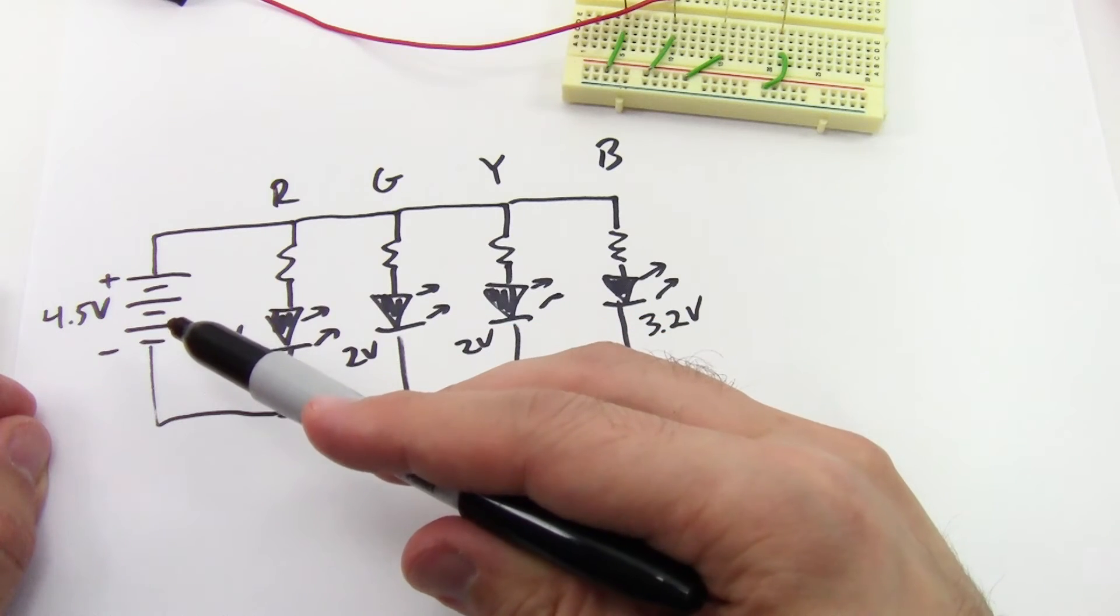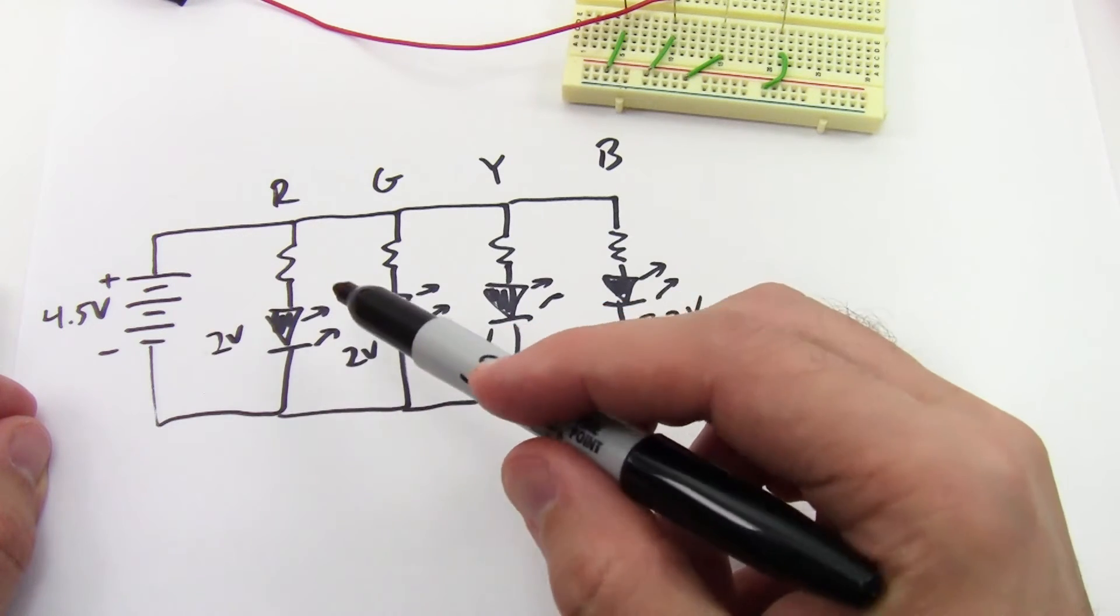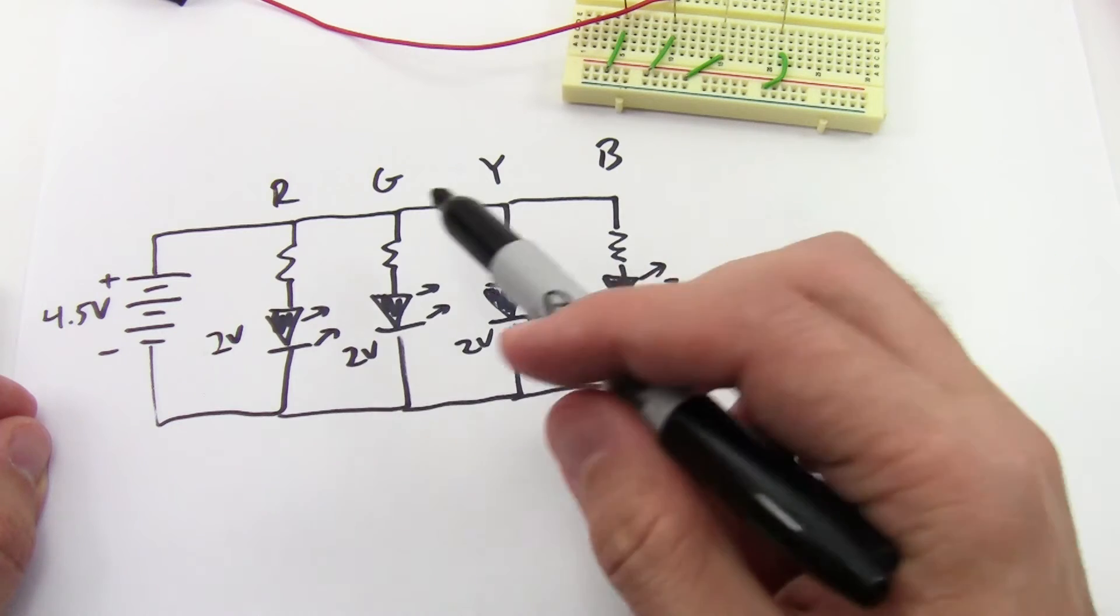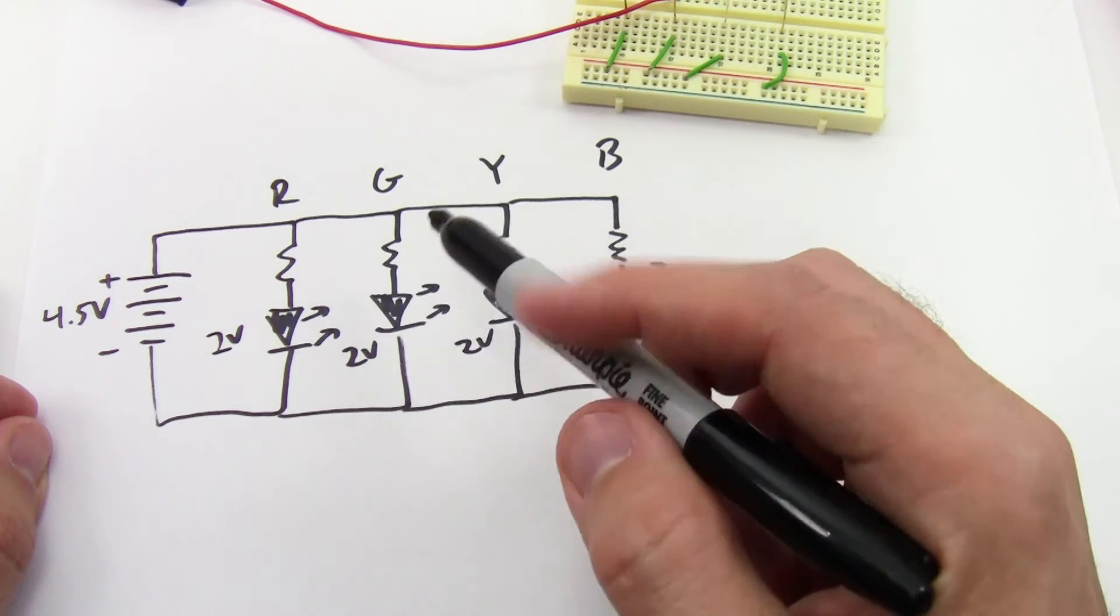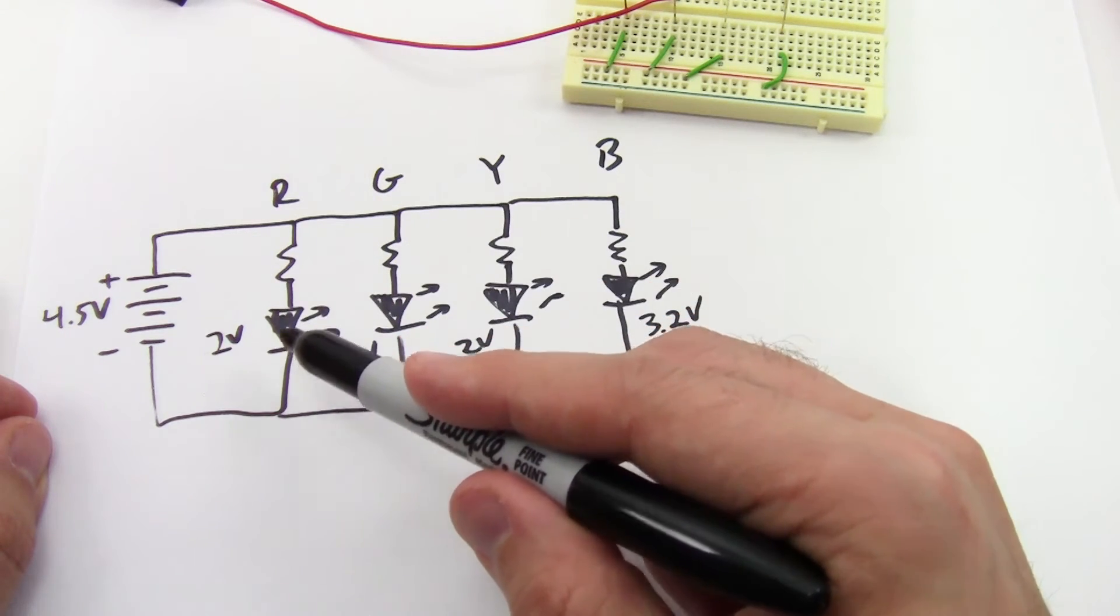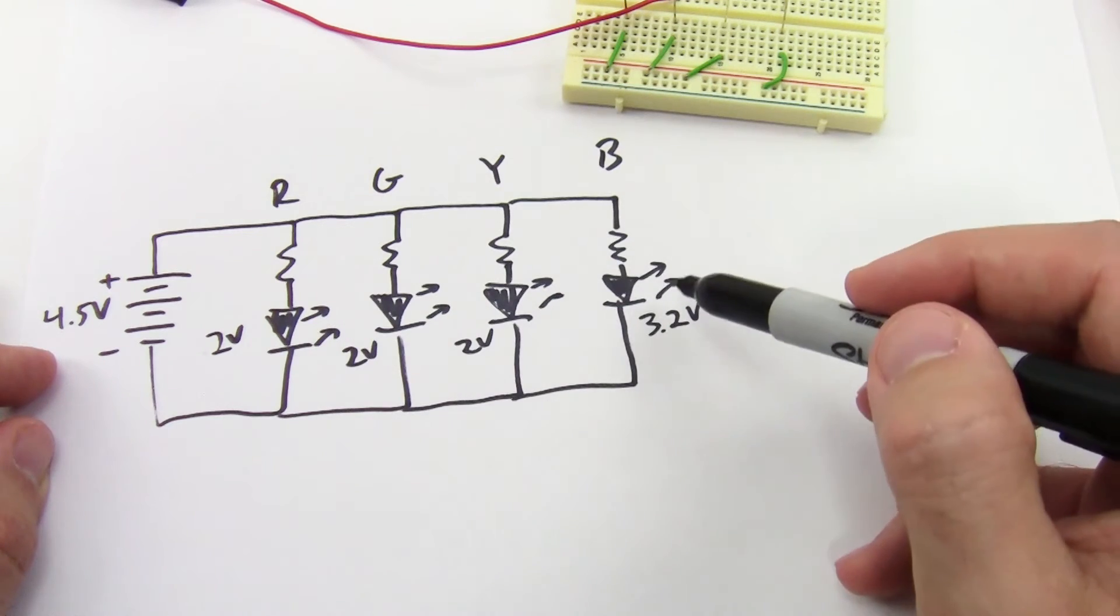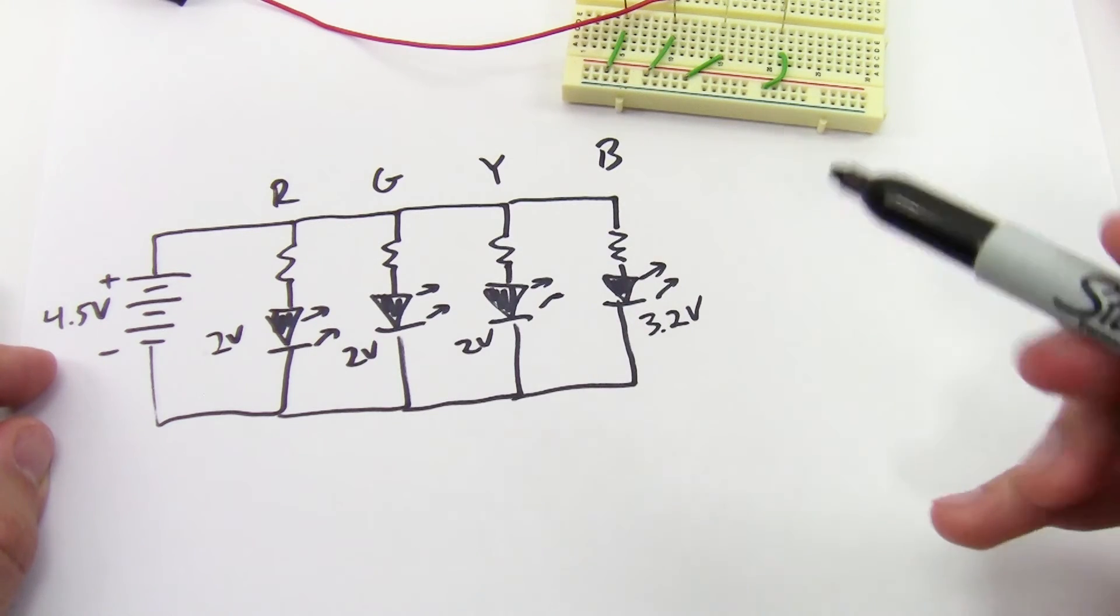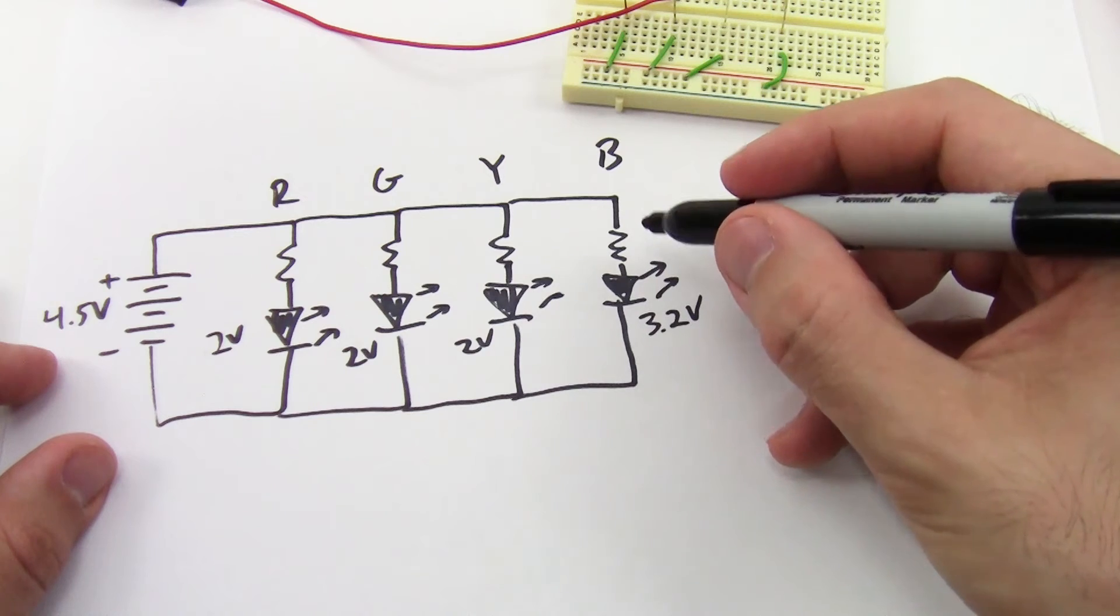So to figure this out, I now have my 4.5 volt battery and four LED resistor pairs in parallel. The red, green, and yellow LEDs all have a forward voltage drop of about two, but the blue has a higher voltage drop of about 3.2 volts, and I want 20 milliamps through all of them.